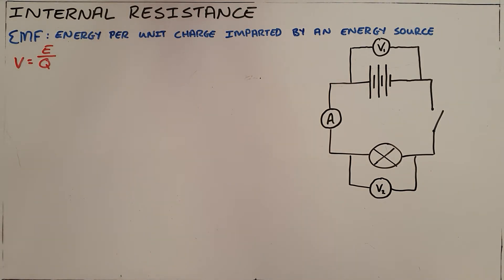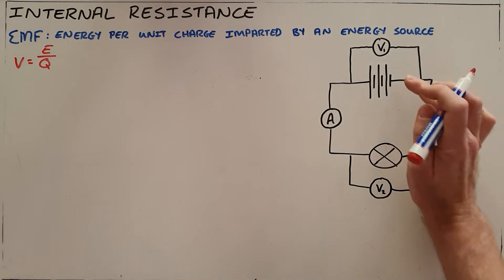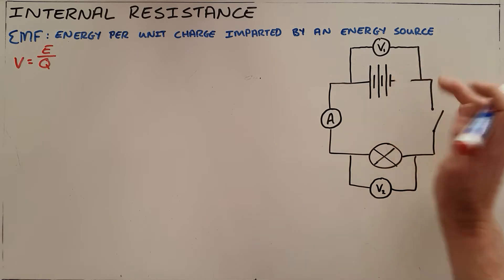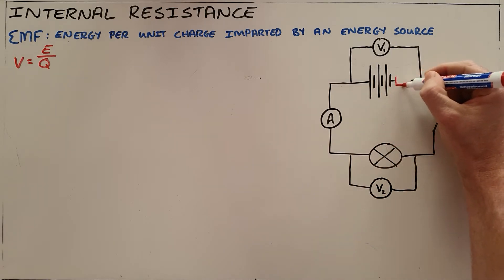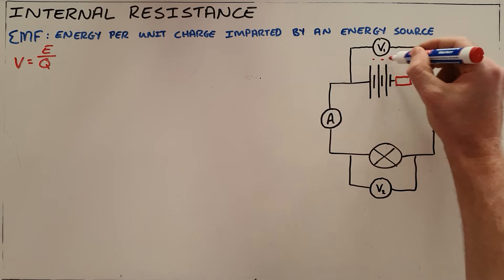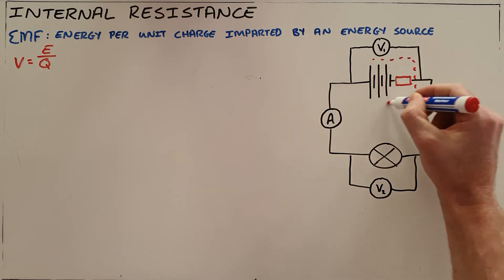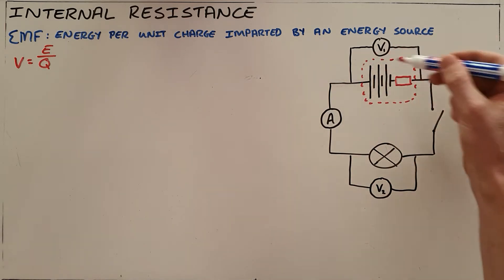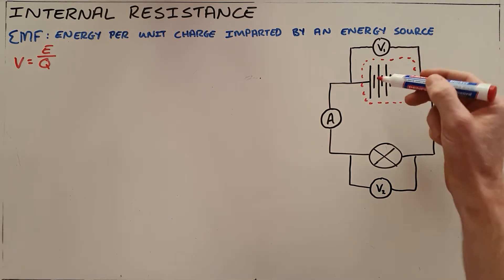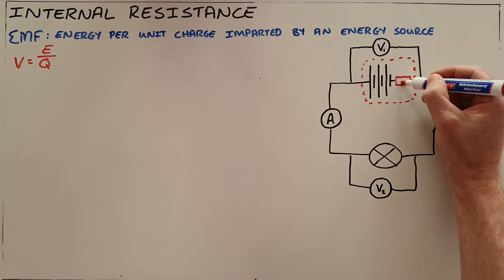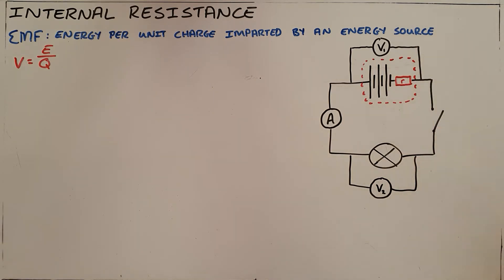In reality, batteries require a certain amount of energy to pass the charge through them, so there is going to be a certain amount of energy lost to something we call internal resistance within that battery. In an electric circuit, we illustrate that internal resistance by drawing a small resistor and often drawing a dotted line showing that it is all considered to be one item.